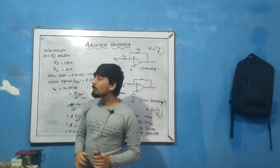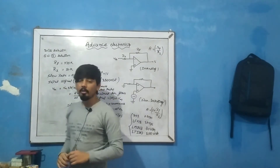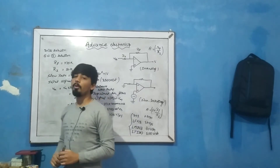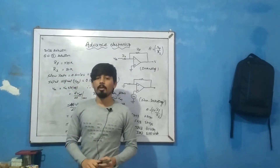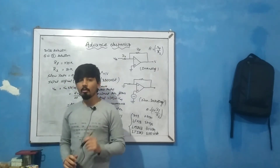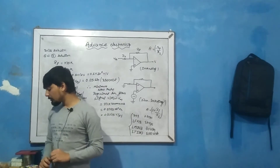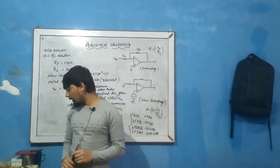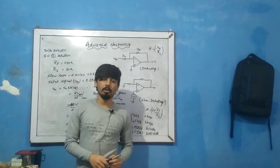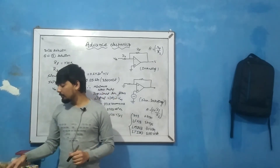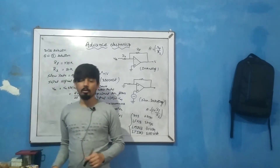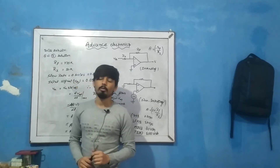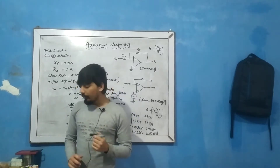Okay guys, so I am discussing question number two from the 2075 Swingo exam. This is a slew rate numerical — the question is: what is the cause of slew rate limiting? This is worth 2 marks or 5 marks. First, let's understand what slew rate is.